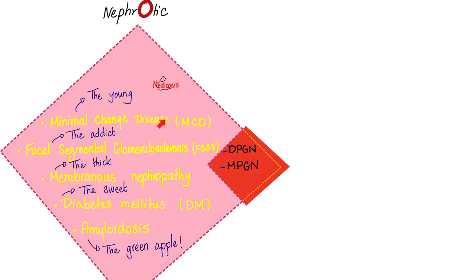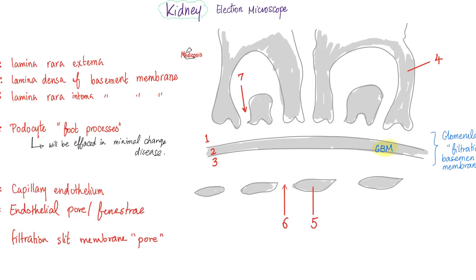In minimal change disease, we see effacement of the podocyte foot processes. The podocyte foot processes are normally arranged in a zigzag pattern, but in minimal change disease or focal segmental glomerulosclerosis, they are flattened — no zigzag action, just flat.